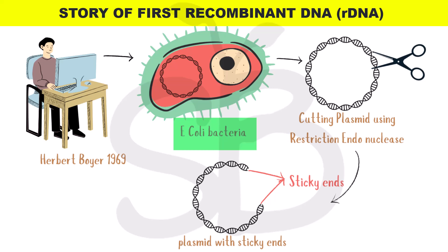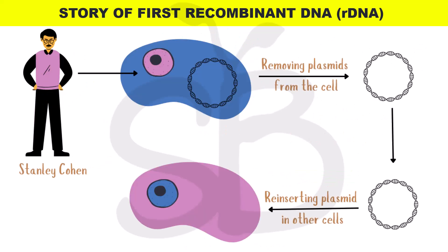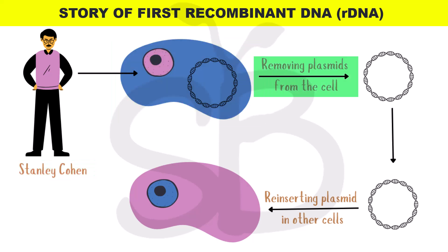Restriction enzymes recognize and cut the same patterns in the DNA. This property — known as stickiness, or sticky ends — is a very important and interesting concept in recombinant DNA technology.